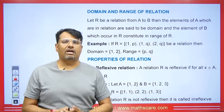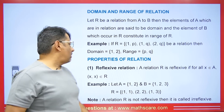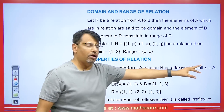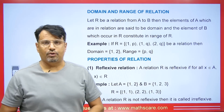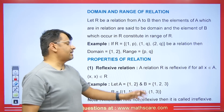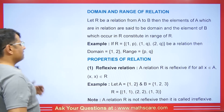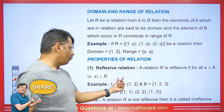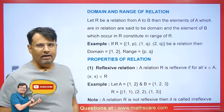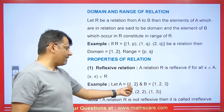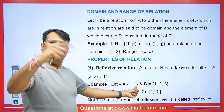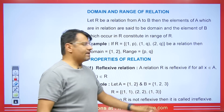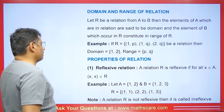Now we will talk about properties. Whether a relation is reflexive or not — a relation R is reflexive if, for every x belonging to A, the pair (x, x) should be in R. For example, if set A is {1, 2} and we have a relation with elements (1,1), (2,2), and (1,3), then since 1 maps to 1 and 2 maps to 2, this relation is reflexive. The extra element (1,3) does not affect reflexivity.